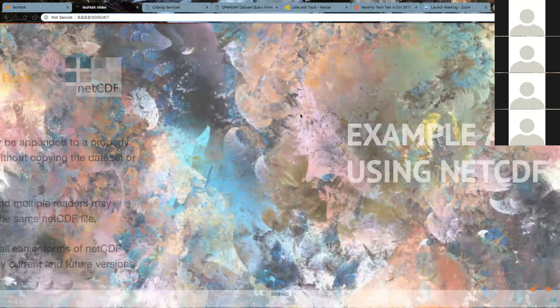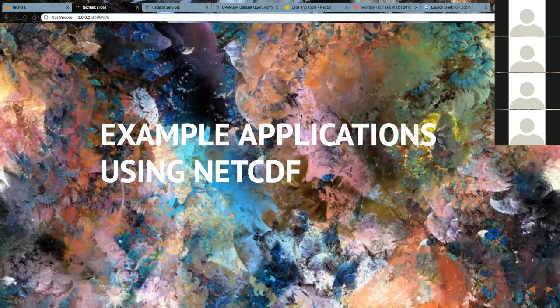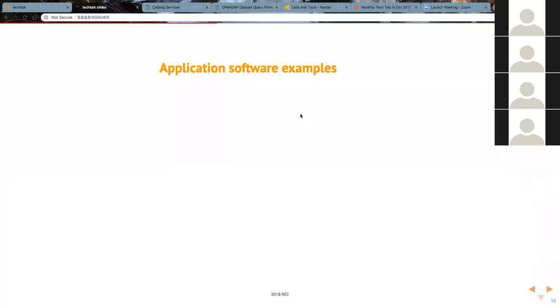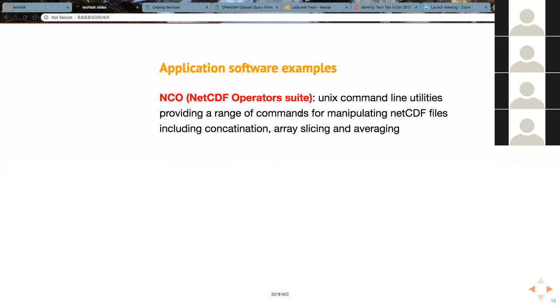Some example applications that use NetCDF. There are a lot of them, I'm just going to go through a couple just to give a general example. NCO, which is the NetCDF operator suite, is a Unix command line utility providing a range of commands for manipulating NetCDF files. You can do things such as concatenation, array slicing and averaging fairly easily.